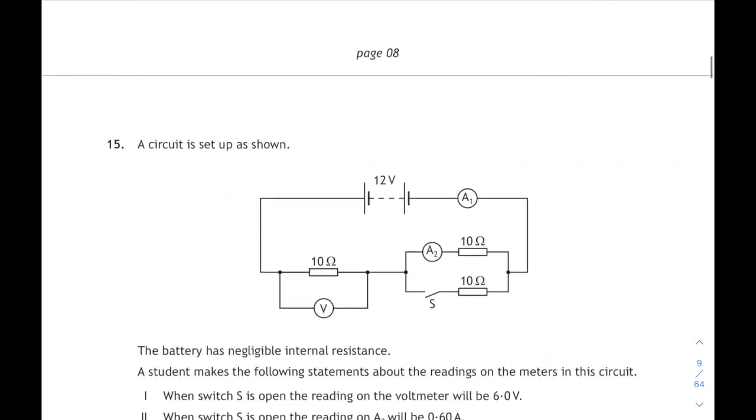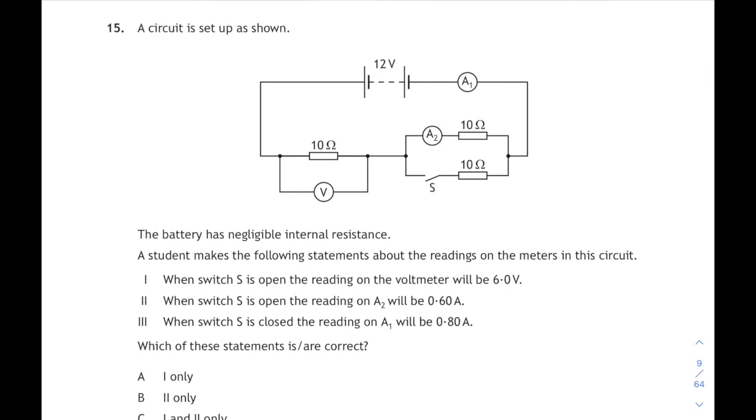Moving on, question 15. We're on to electricity. The circuit setup is shown and the battery has negligible internal resistance. It's a triple statement question. We have to decide which of the statements is or are correct. First one: when the switch is open, the voltmeter reads six volts. Well with the switch open we've got two 10 ohm resistors in series, so those two 10 ohm resistors will share the 12 volts equally. So yes, the voltmeter will read six volts each.